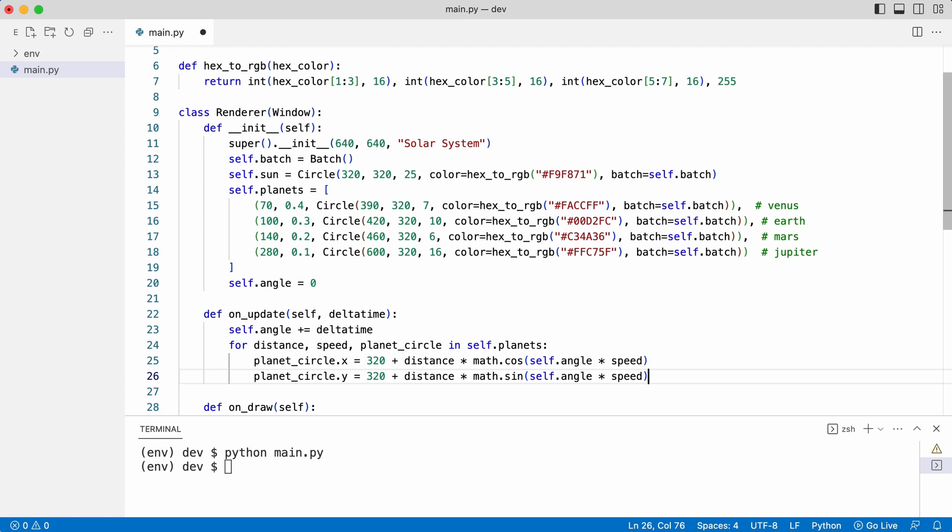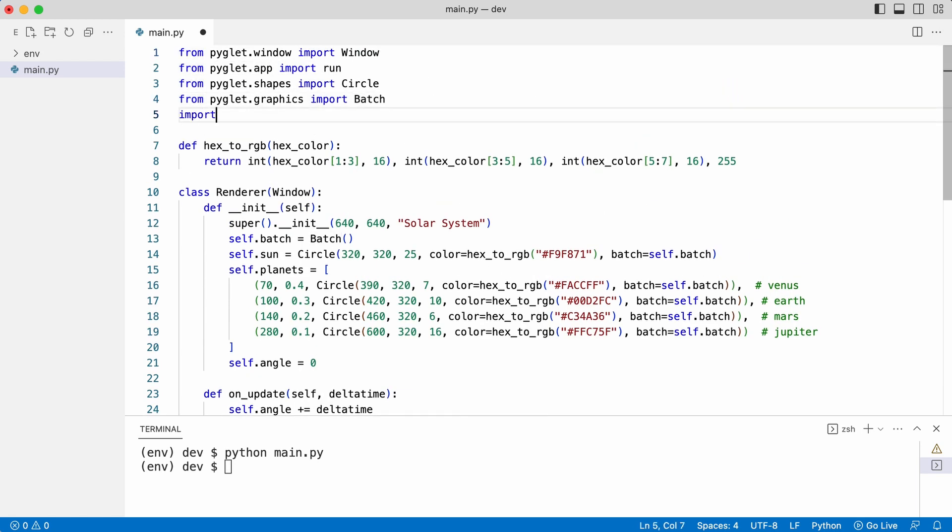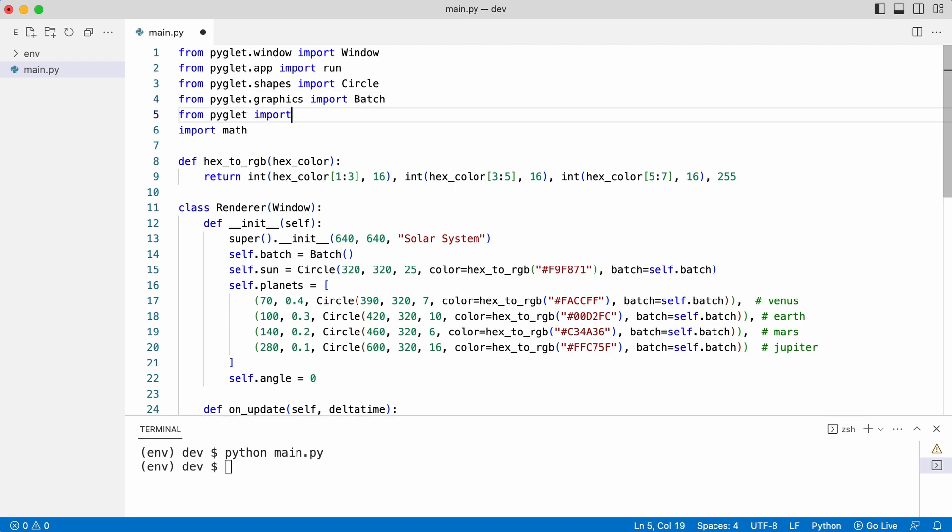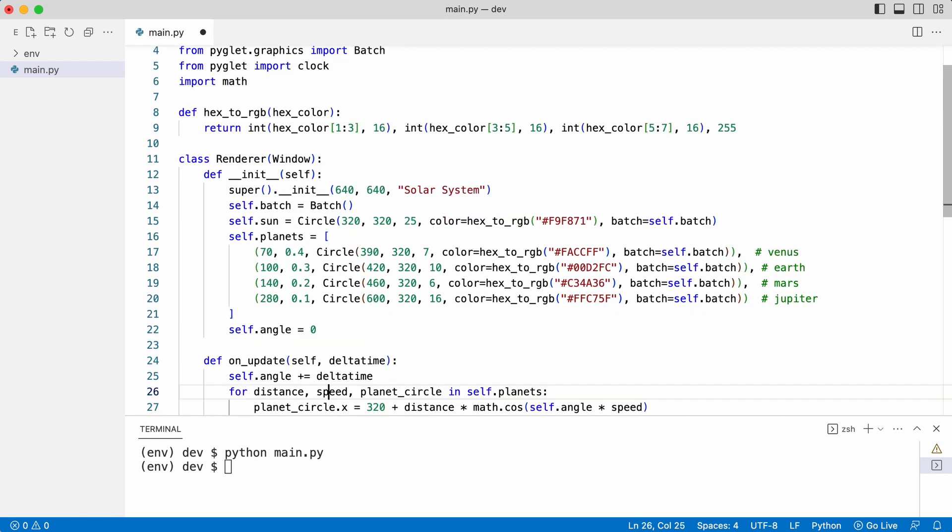Math needs to be imported. And finally the update method needs to be called. For this clock needs to be imported. And clock will now schedule a call to the update method 60 times per second.